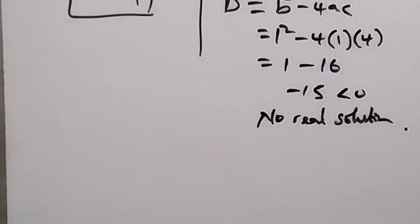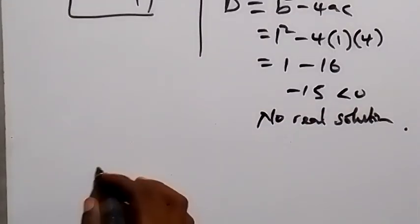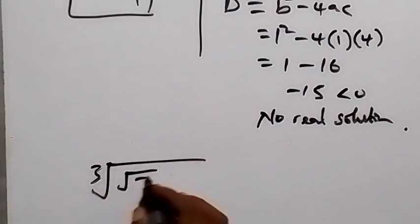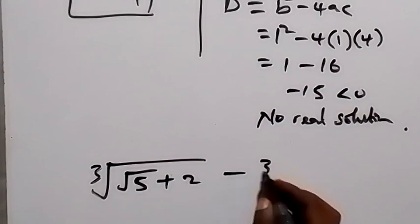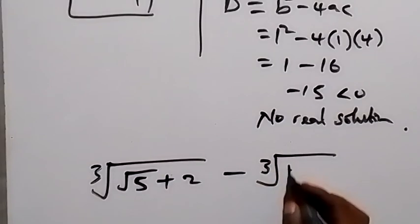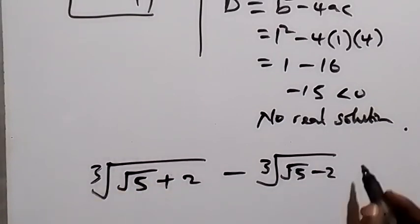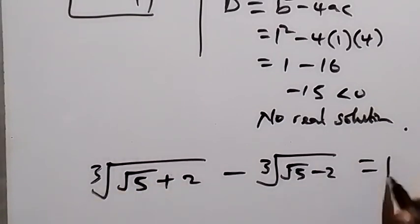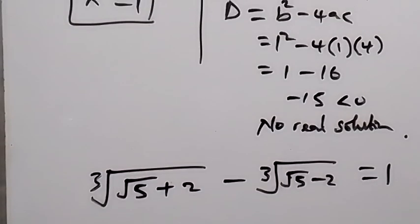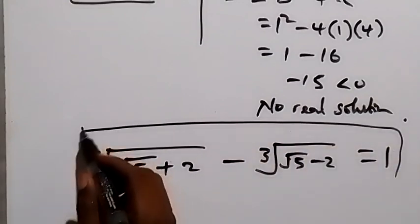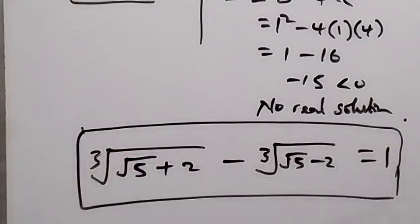Therefore the value of x is 1. Don't forget that we represented the cube root of (√5 + 2) minus the cube root of (√5 − 2) as x. So since x = 1, the simplified form of the given expression equals 1. Thank you for watching — subscribe to my channel so as not to miss out. See you in the next class!